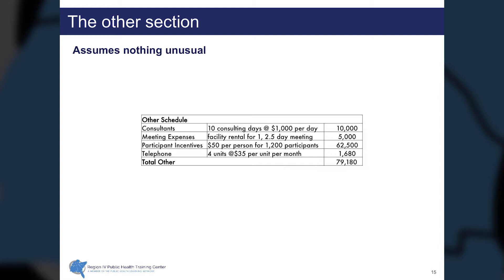In the other section, we capture a schedule of miscellaneous items that are essential to the project itself. Here I've identified consultants, meeting expenses, participant incentives, and telephone expenses for a total of $79,180 for this project.